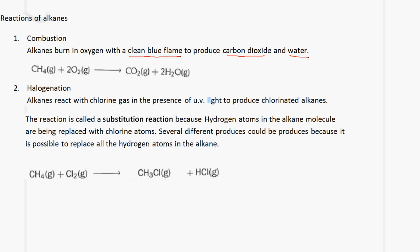The second reaction we're going to look at is halogenation. Alkanes react with chlorine gas in the presence of UV light. This is the key thing to remember — this reaction takes place in UV light to produce chlorinated alkanes. The reaction is called a substitution reaction. The hydrogen atoms in the alkane molecule are replaced with chlorine atoms.